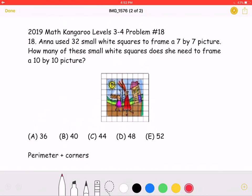To start, in order to find the number of squares needed to frame a picture, we need to add the perimeter of the shape plus the corners.